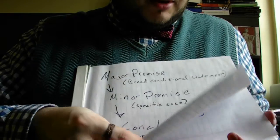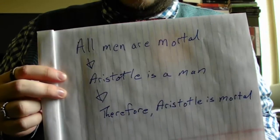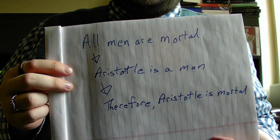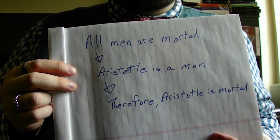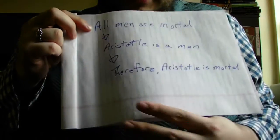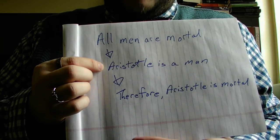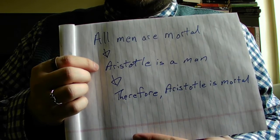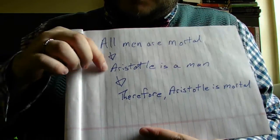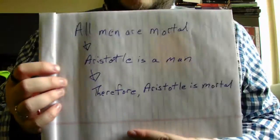We have a very famous classical syllogism which may make this more concrete. All men are mortal — that's the major premise, a broad conditional statement we can accept as true. Aristotle is a man — that's a specific example fitting within the broad group. Therefore, Aristotle is mortal. That's our conclusion.